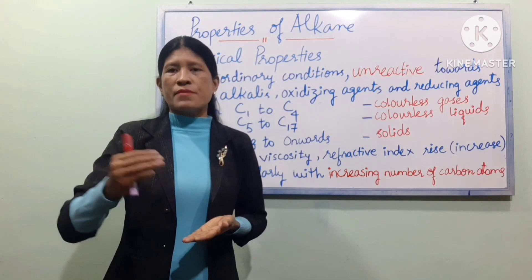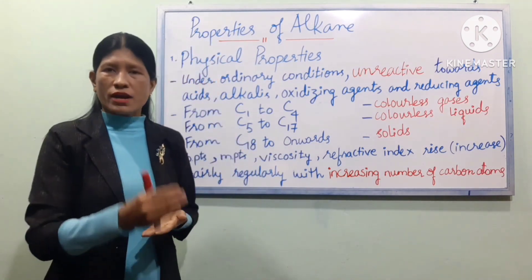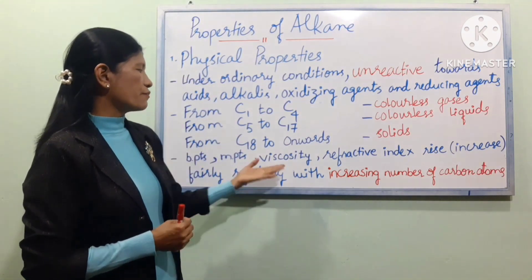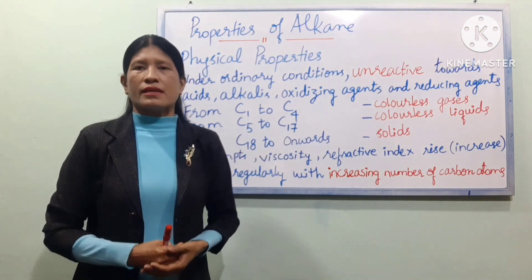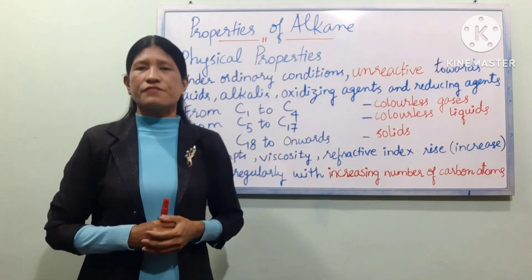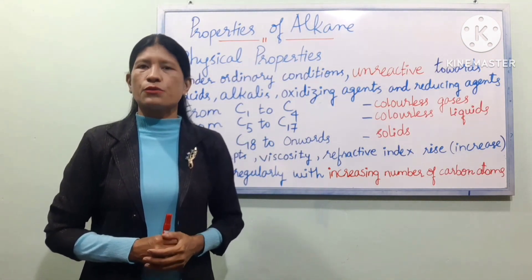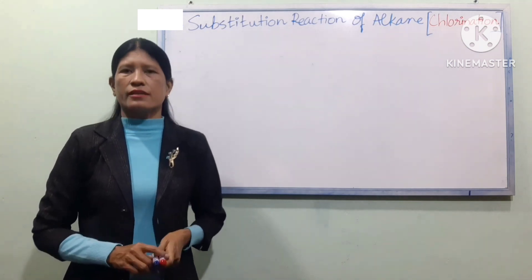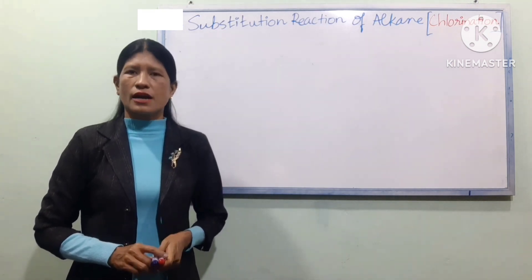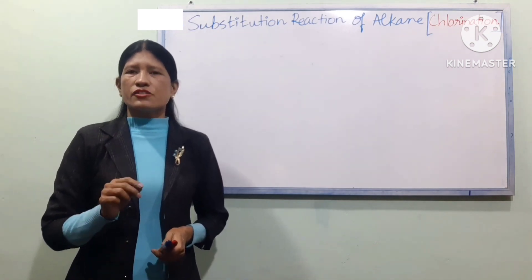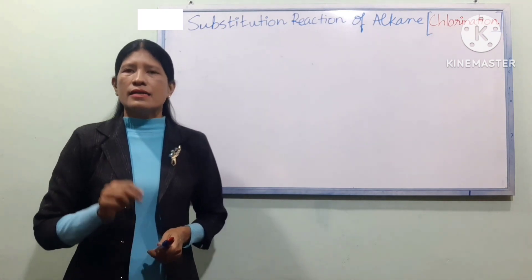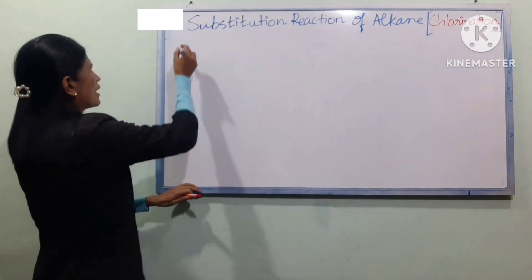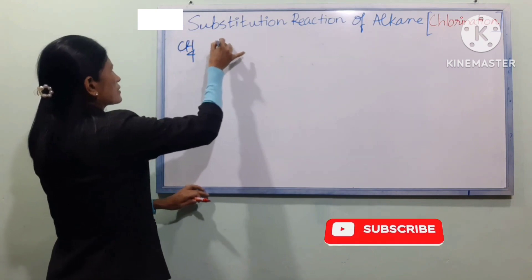LK physical properties — boiling points, melting points, viscosity, and refractive index — all increase with increasing number of carbon atoms. Now, the chemical reaction: substitution reaction of LK. Chlorination — in the case of the saturated hydrocarbon, we substitute CH4 with Cl2. CH4 plus Cl2.